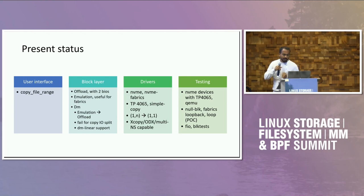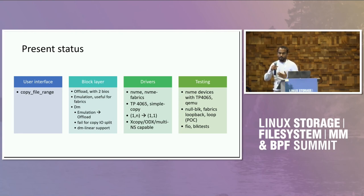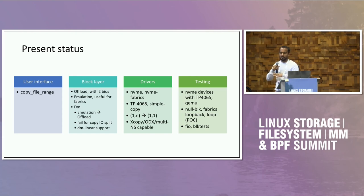We also have emulation for cases where copy offload is not present — Demin suggested we add it. This is especially beneficial in the Fabrics case: if a device doesn't actually support copy offload, from the host side we can still send a copy command and through emulation complete the copy from the host. We saw around 30 to 40 times improvement in both desktop and server environments.